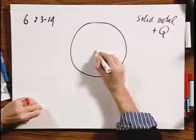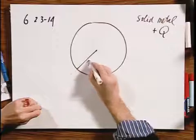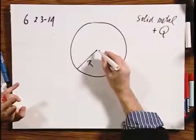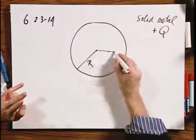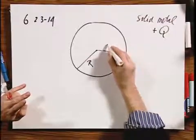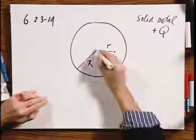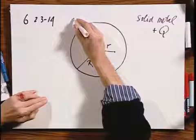And there is a charge plus Q on this sphere. And you're being asked if the sphere has a radius capital R, what the electric field inside the sphere is, radius little r, and what it is outside the sphere.